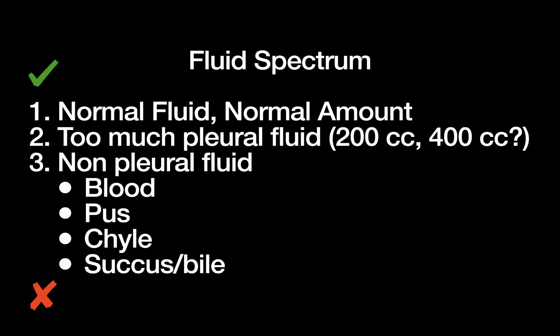Now the other half of our spectrum is about fluid. The best case scenario is normal fluid in the normal amount. The pleural space, like many other parts of the body, is in constant homeostasis — there's always fluid being excreted and fluid being absorbed. A normal amount is around 400 to 500 cc's. Normal fluid is fairly thin and translucent with that yellowish-pinkish color — hard to describe in words, but you'll get used to seeing it once you've seen several patients with chest tubes.